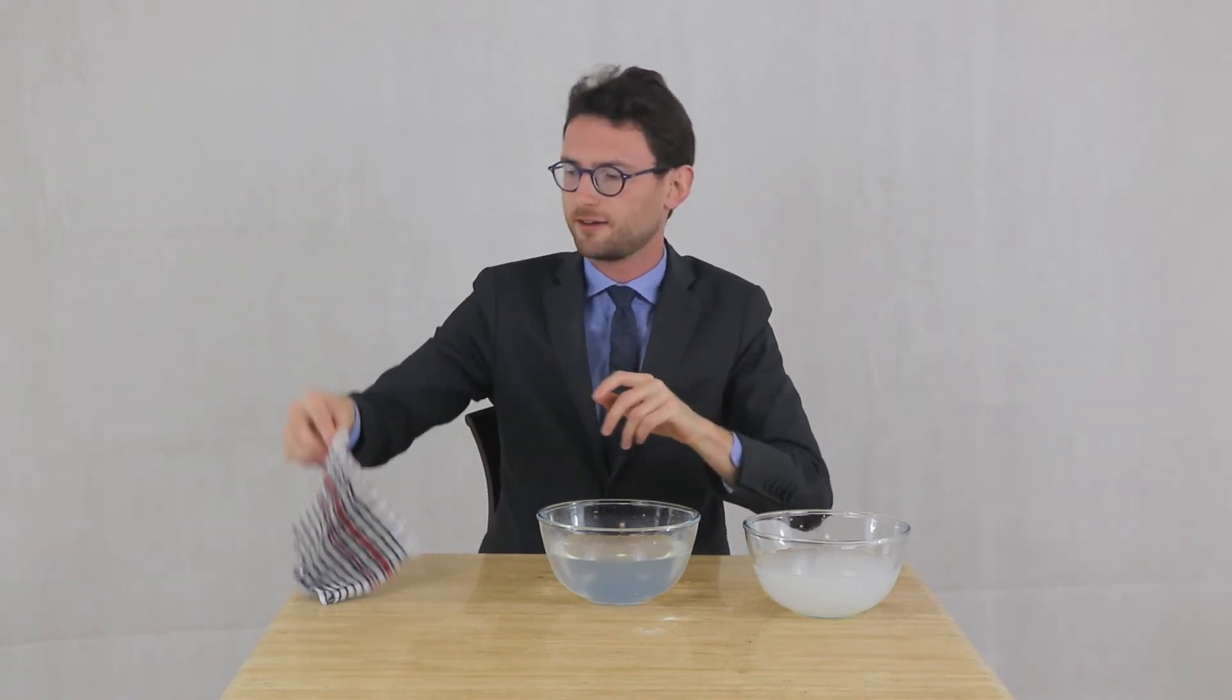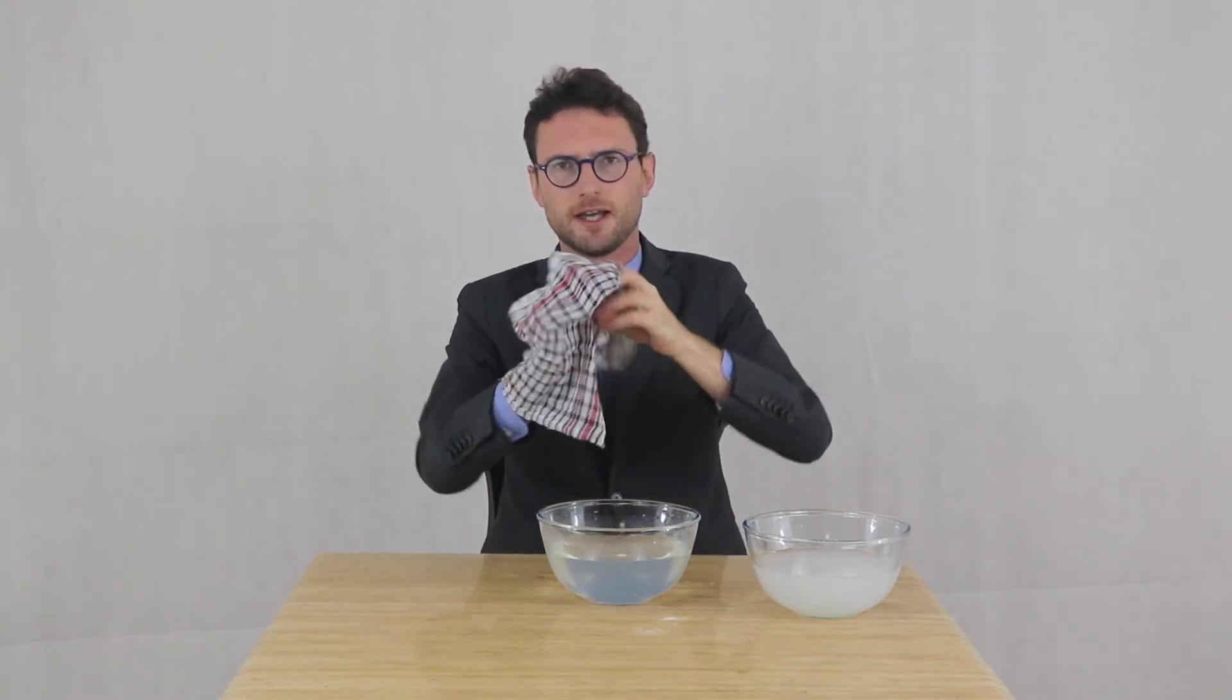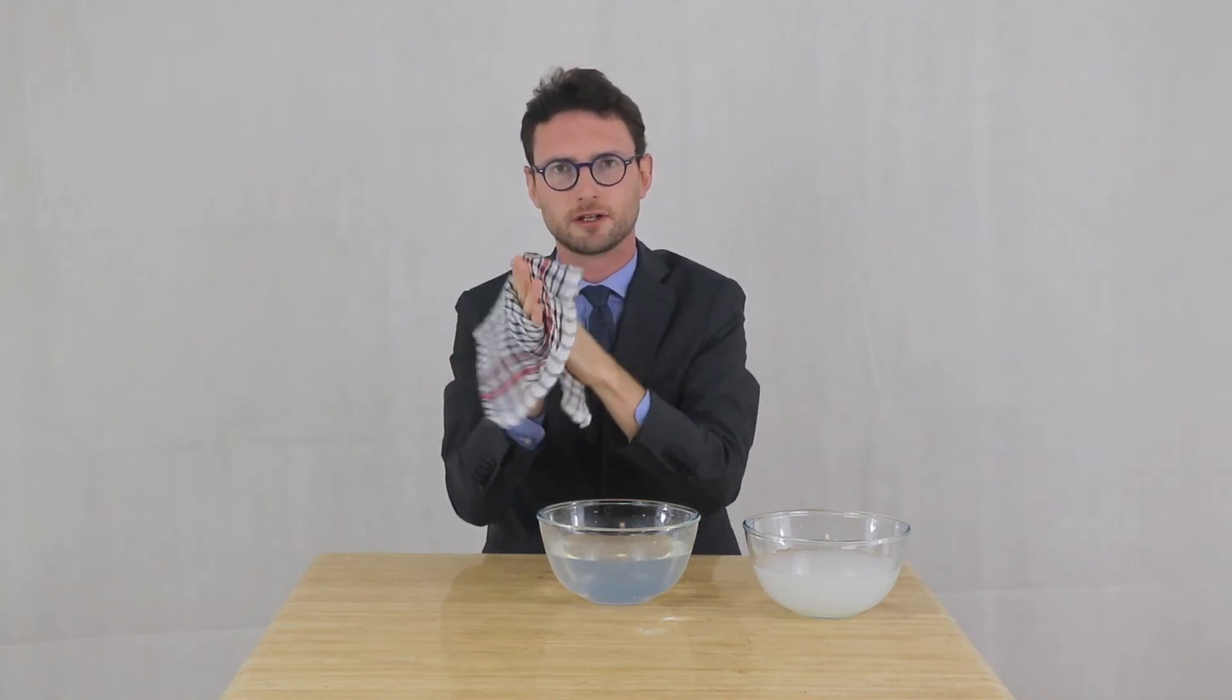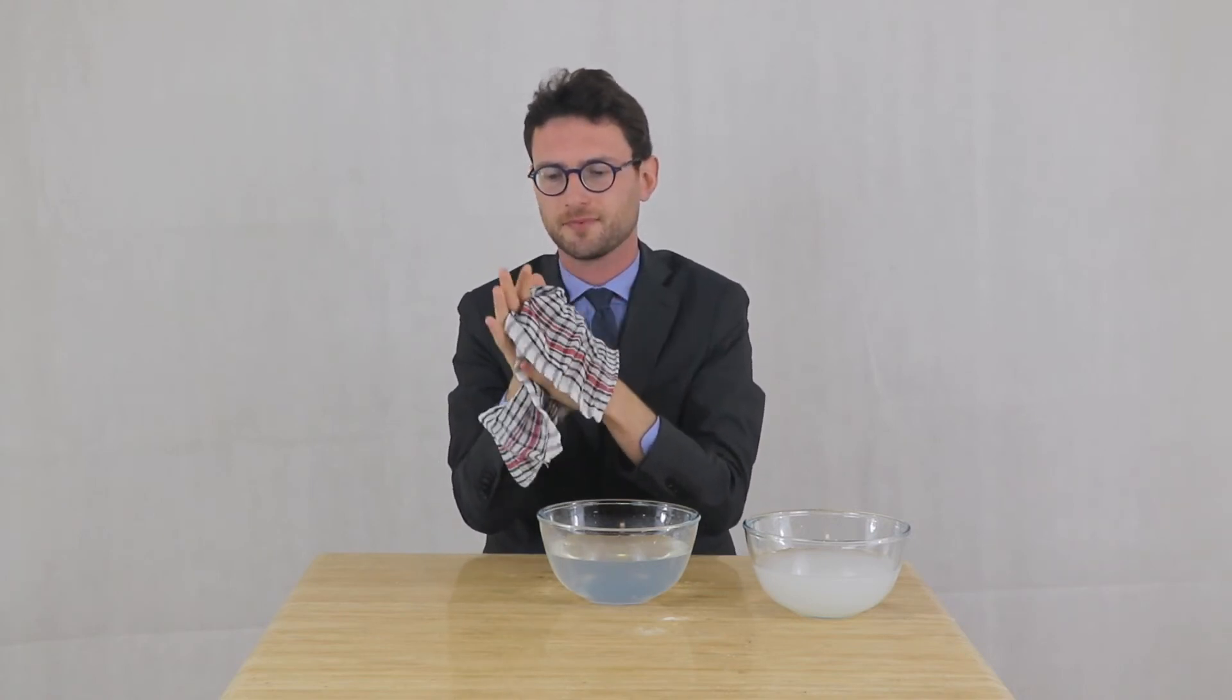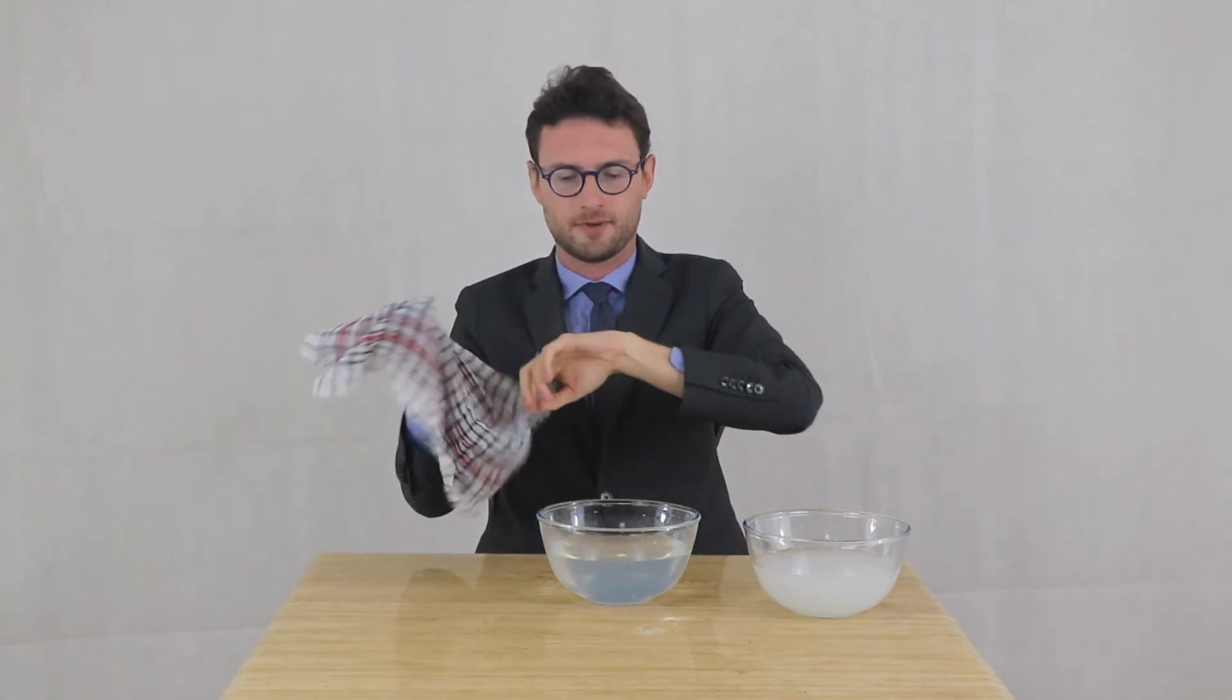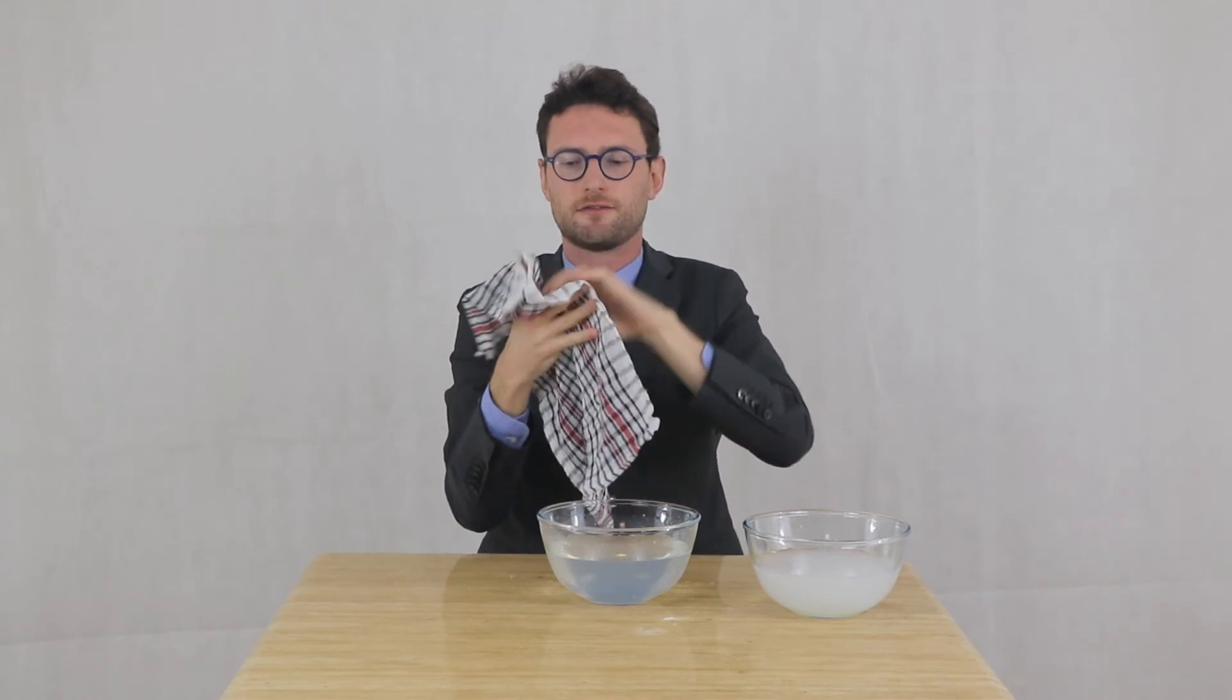And then use the cloth to get the remnants of the water. Again, the same pattern. The palms first, rolling the cloth over the centers of the palms and the insides of the fingers. Then the outsides of the hands. Don't forget the wrists. And then in between the fingers.